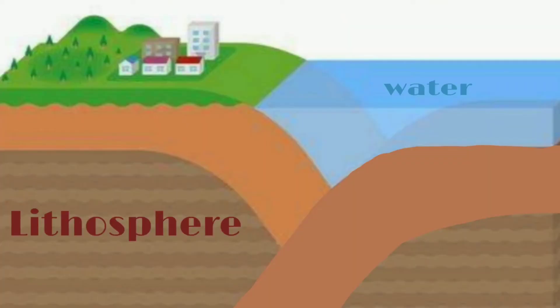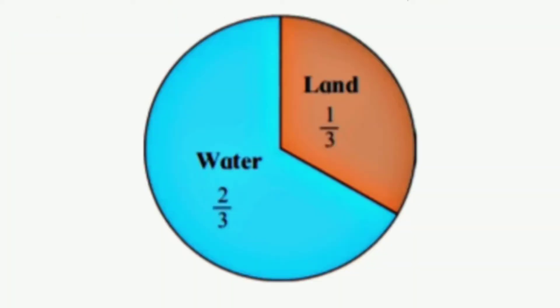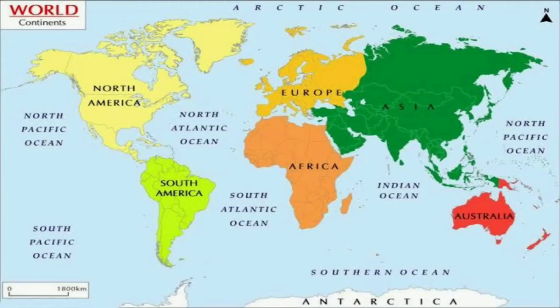All these landforms are part of the earth's lithosphere. About a third of the surface of the earth consists of land. A large continuous stretch of land is called a continent.